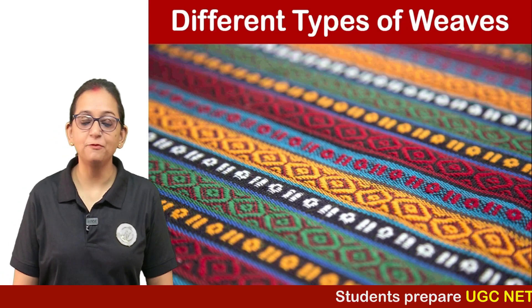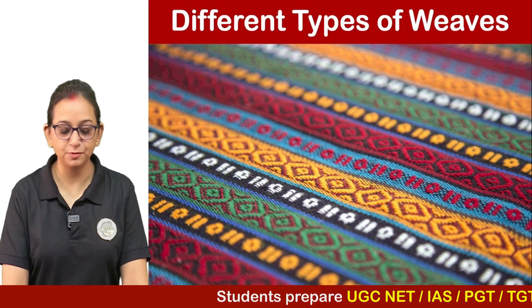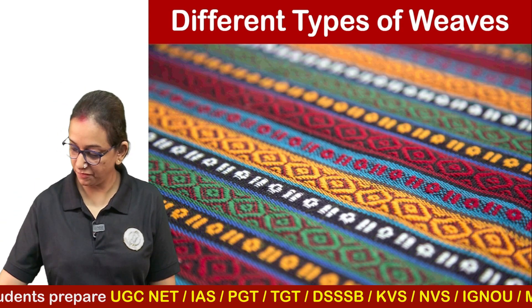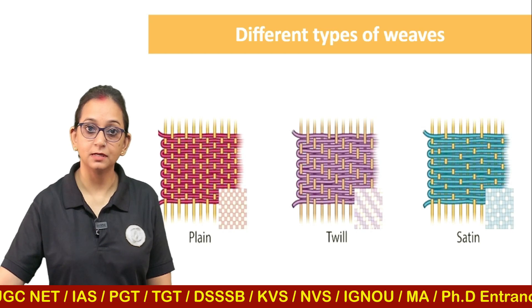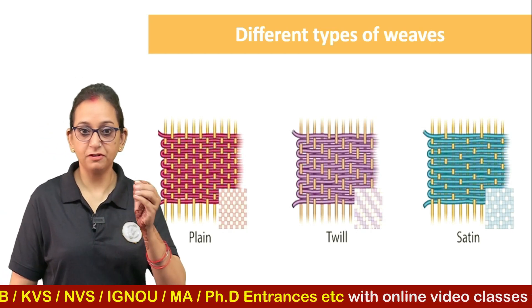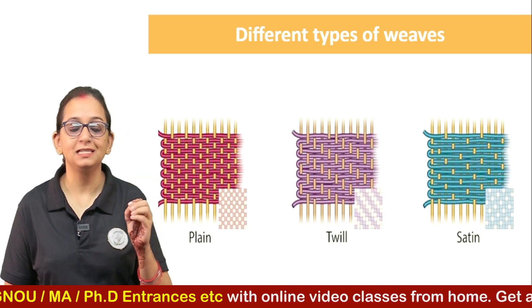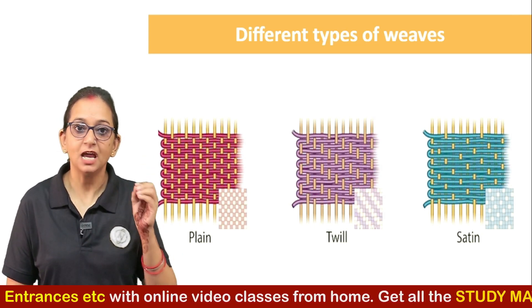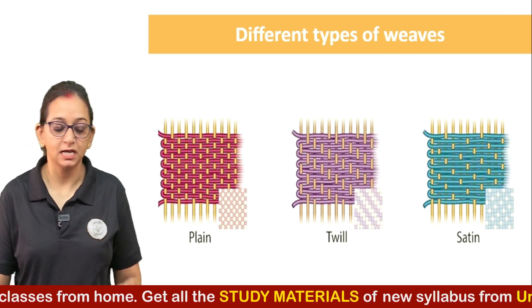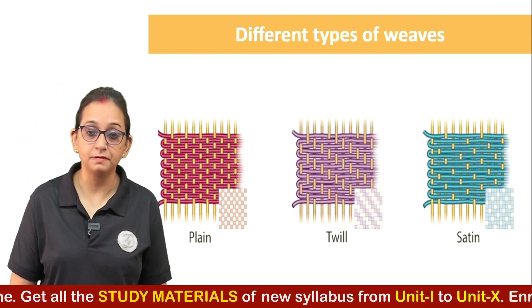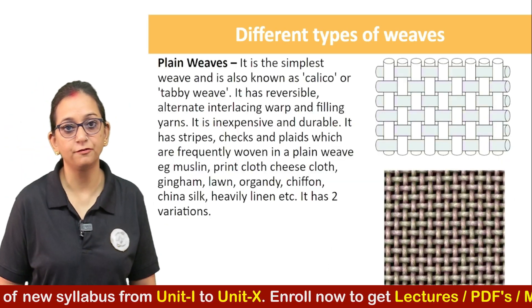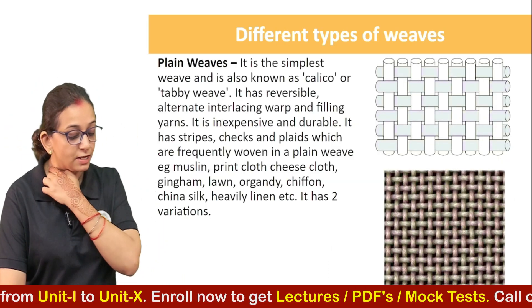Hi students, today we'll be talking about the different types of weaves. The fabric, whichever fabric that you wear or you see as curtains or bed sheets, they all have different kinds of weaves — some are plain, some are twill, some are satin, some are rib weaves. So today we'll be talking about these different kinds of weaves.